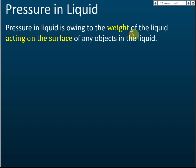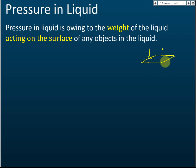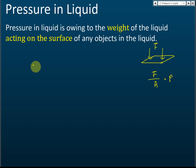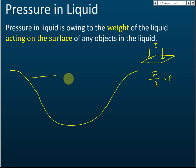Pressure in liquid is owing to the weight of the liquid acting on the surface of any object in the liquid. Pressure is force per unit area — if you apply a force to an area, the force per unit area is called the pressure. Now inside a liquid, let's say we have a pool with water inside.